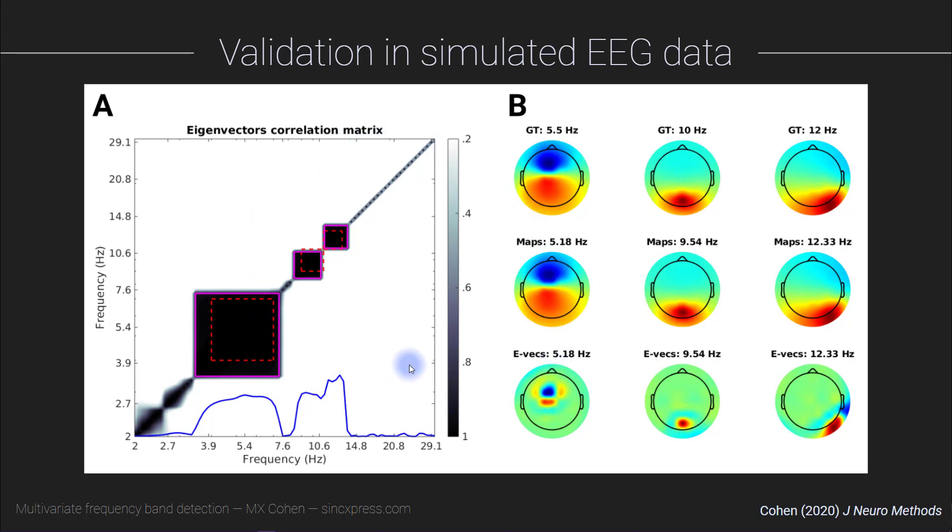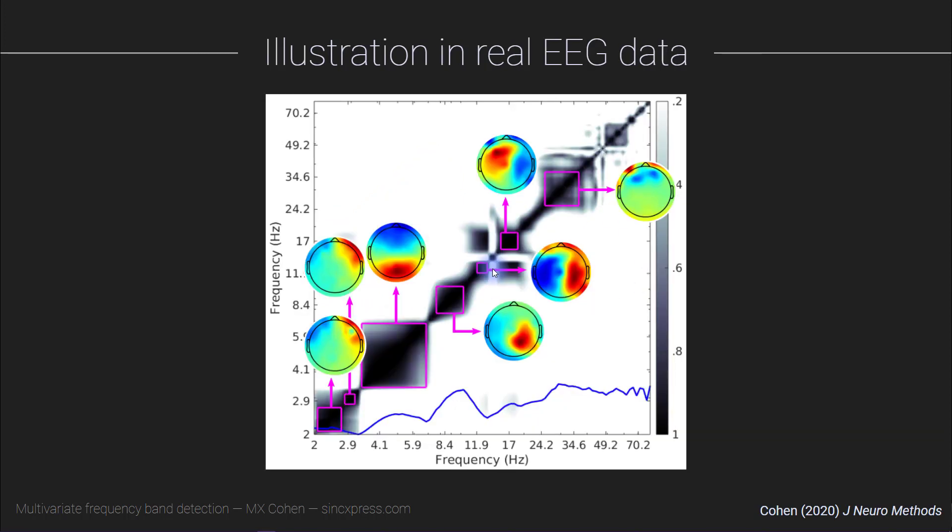So it works quite well in data simulations. But on the other hand, we can always create the simulations to have low noise and high signal energy and get the results to work. Here you see some results in empirical data. This is a resting state EEG data set where we don't actually know the ground truth, but these results do look pretty sensible. We see some very low frequency components, which appear to be blink artifacts or eye movement artifacts. Here we see something that looks like theta. This is the alpha component, maybe a second alpha component in a slightly higher frequency, and so on.